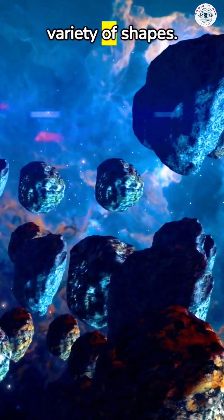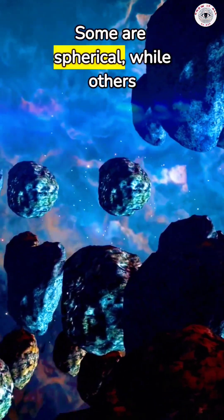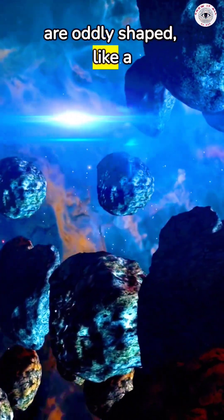Asteroids can have a variety of shapes. Some are spherical, while others are oddly shaped, like a potato.